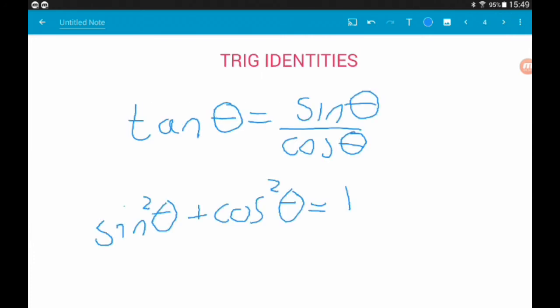Then we're going to be learning some new trig identities, so in particular these two. Don't worry about them too much now though. Tan of theta is actually sine of theta over cos of theta, and sine squared of theta plus cos squared of theta is equal to one. So we're going to look at proving these guys and also manipulating them in proof type questions.